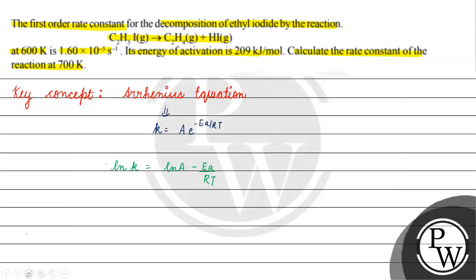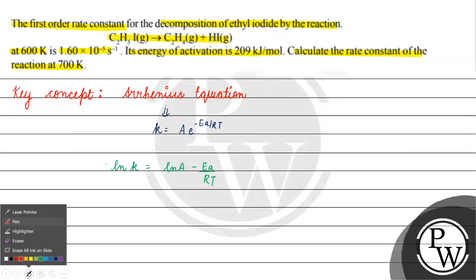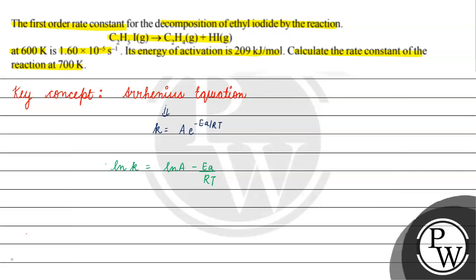Now we write it in log k terms. Log of k is equal to log of A minus Ea by 2.303 RT.